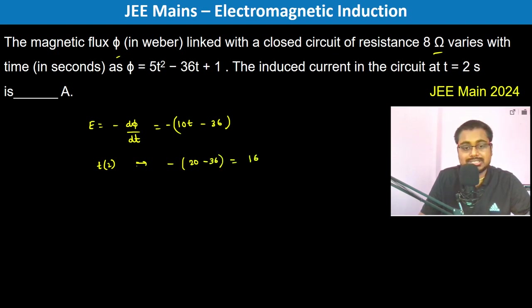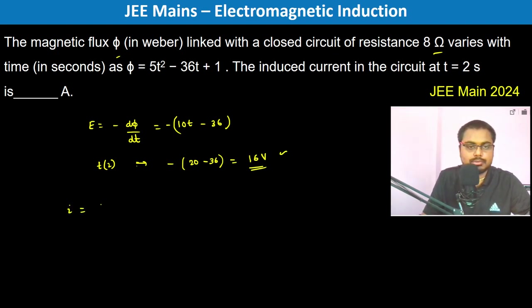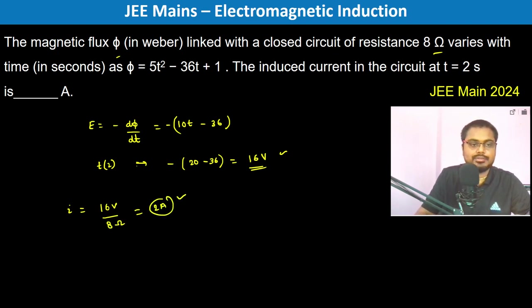Therefore, the induced current is going to be 16 volts divided by 8 ohm, which gives 2 ampere. So the final answer is 2 ampere.